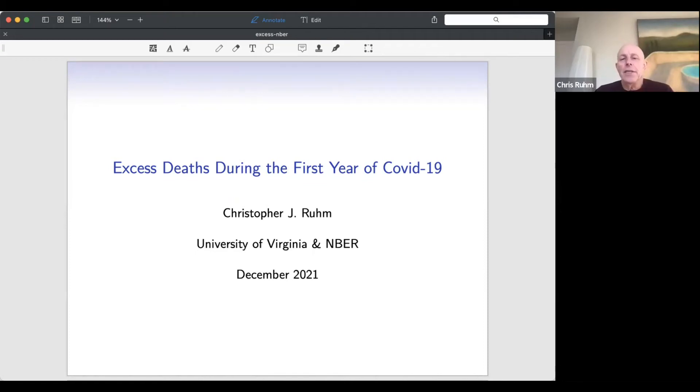Let me set the stage to say what is the question we're interested in. It is how many additional deaths occurred during COVID-19, at least during the first year, which I'm going to date from March of 2020, which is when we saw the first significant deaths in the U.S. from COVID through February of 2021.